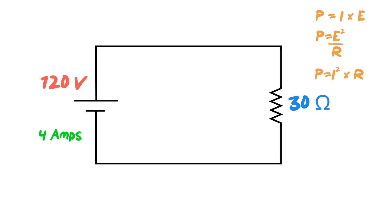Using Ohm's Law first, we're just going to find the current. 120 volts divided by 30 ohms gives us 4 amps. So now we have the voltage, the current, and the resistance — let's use those to determine what our power is in this circuit.